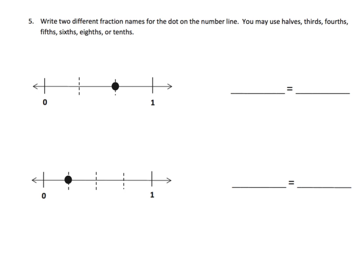So here, it says write two different fraction names for the dot that's on the number line. So the first thing we have to do is identify what fraction is this. So starting at 0, 1, 2, 3. So there, from the space from 0 to 1 is broken up into three pieces. So that's thirds. So 0 thirds. And of course, 1 would be 3 thirds. So that would make this dot 2 thirds.